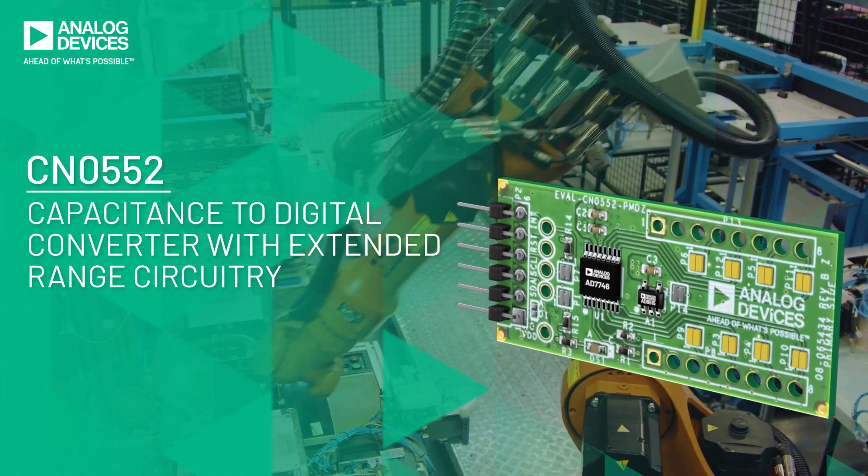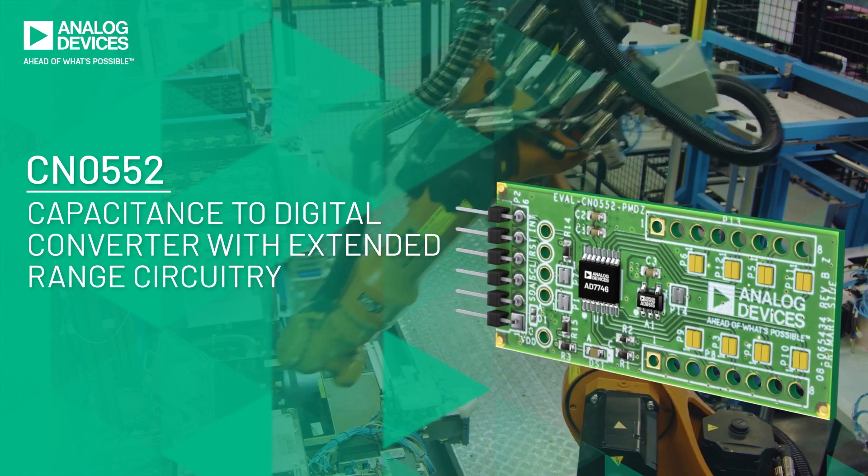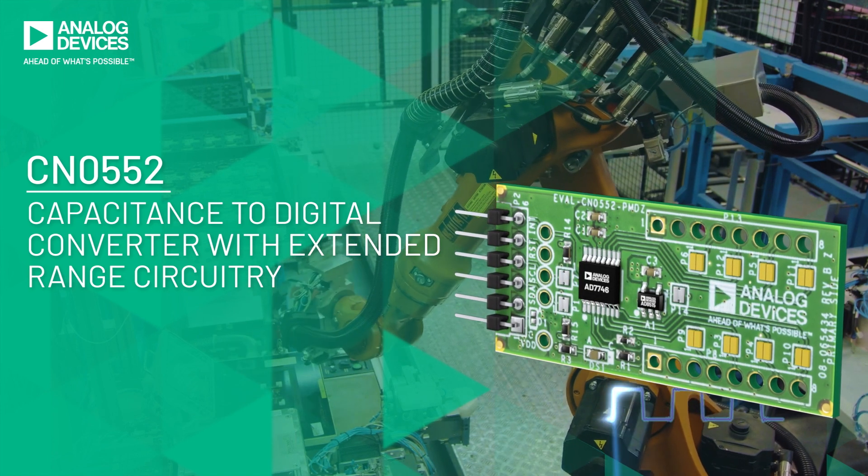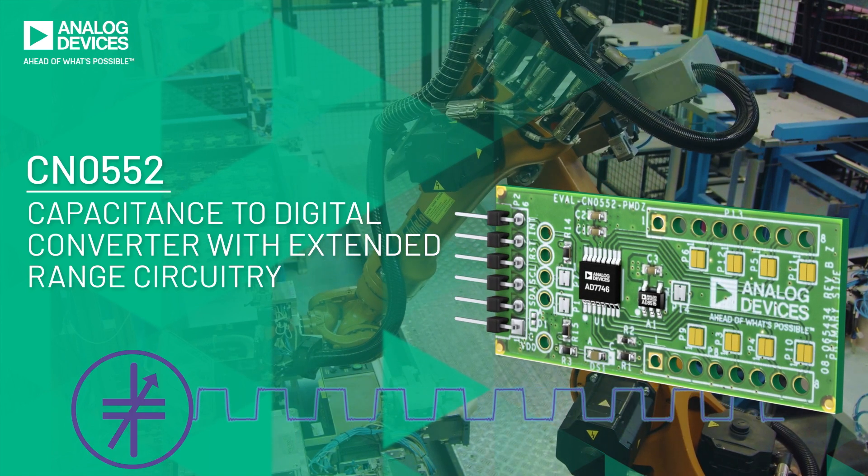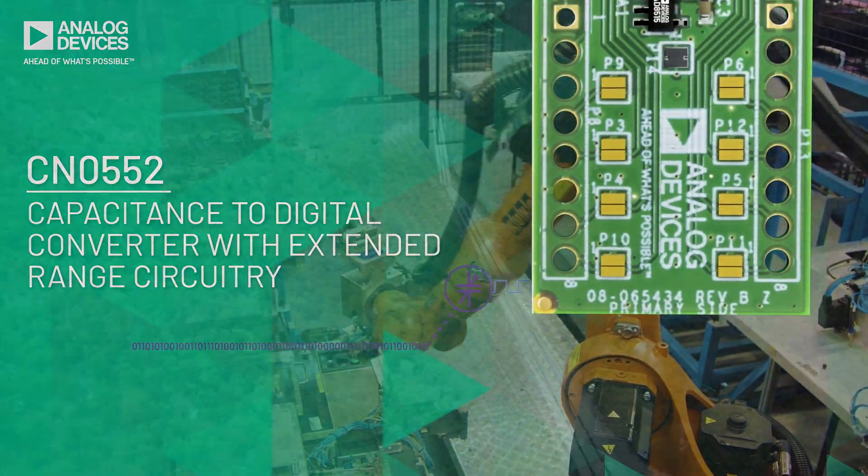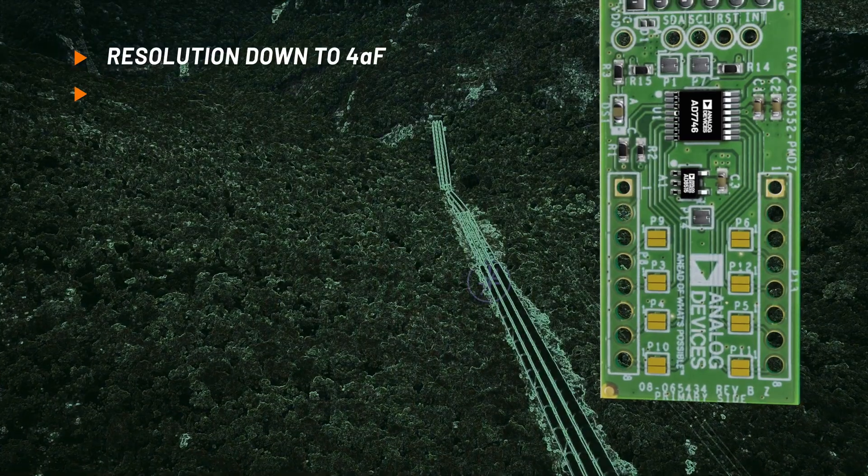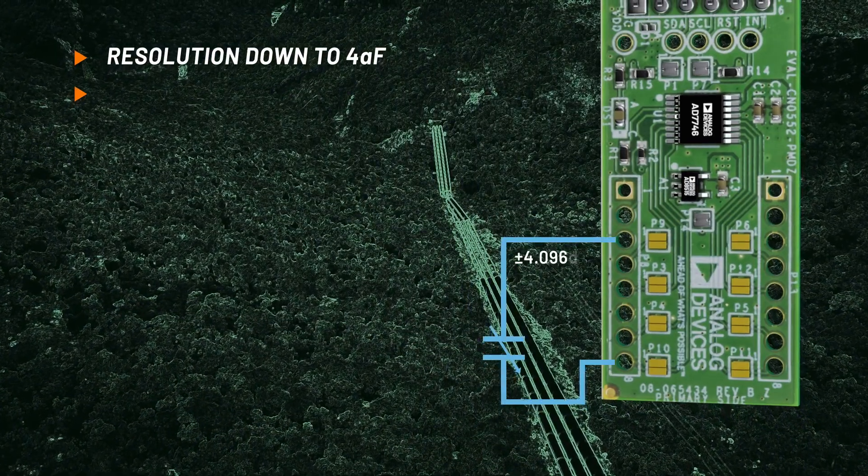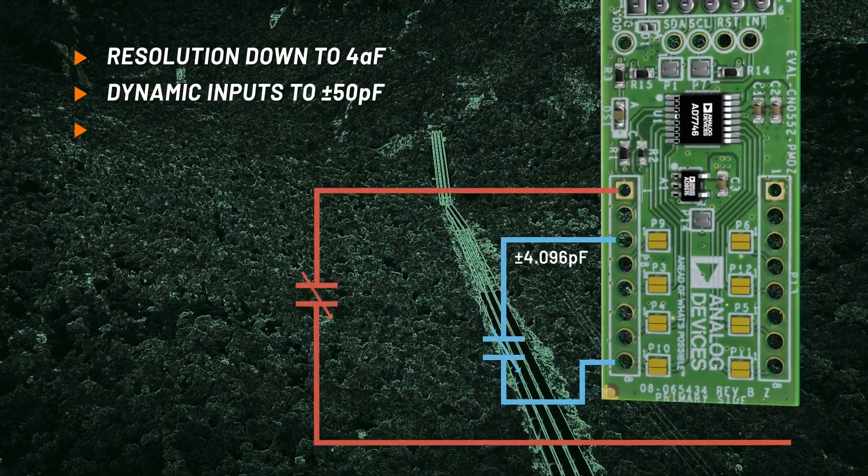The CN0552 provides 24-bit sigma-delta capacitance-to-digital conversion by exciting the unknown capacitance with a square wave and converting the resulting charge into a digital output. Dual high-resolution channels enable multiple capacitive sensors to be measured and an extended range feature